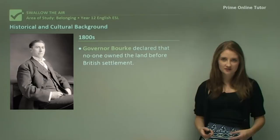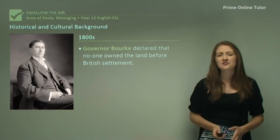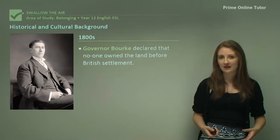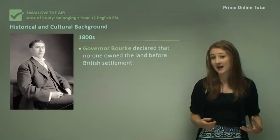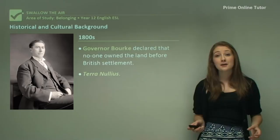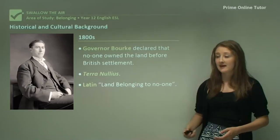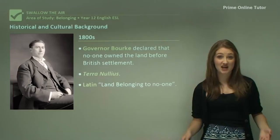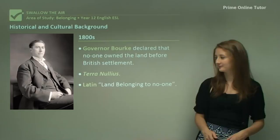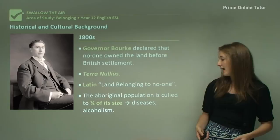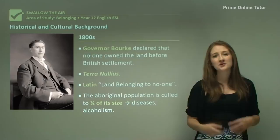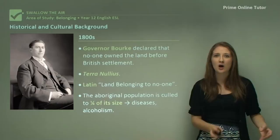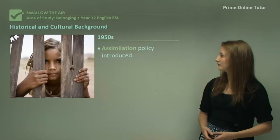In the 1800s, Governor Burke declared that no one owned the land before British settlement — a definitely culturally ignorant notion. Basically, white people believed that no one else owned Australia and that Aboriginal people didn't have a right to the land they had held for thousands of years. This concept became known as terra nullius — Latin for 'the land belonging to no one.' The British saw the absence of houses, fences, and stables as a clue that the land was free for the taking. The Aboriginal population was culled to about a quarter of its size through the deliberate introduction of diseases to which they had no immunity, and also through introducing alcoholism in an attempt to reduce that population — some really nasty stuff happening at this time.